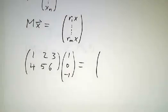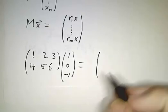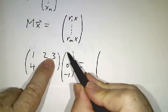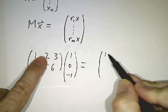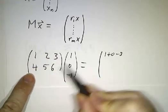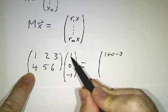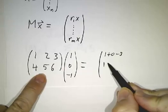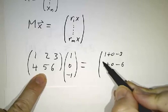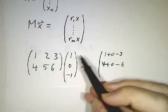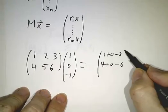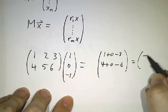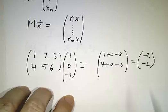So for example, if we were to multiply 1, 2, 3, 4, 5, 6 by 1, 0, negative 1, you'd say, oh, I need to figure out 1, 2, 3 times 1, 0, negative 1. That's 1, plus 0, minus 3. And then the second entry would be 4, plus 0, minus 6. 1 times 4, plus 0 times 5, plus negative 1 times 6, and that gives you negative 2, negative 2.